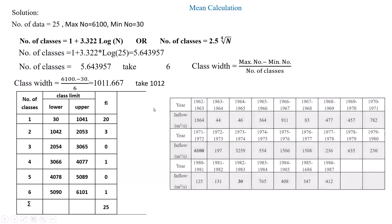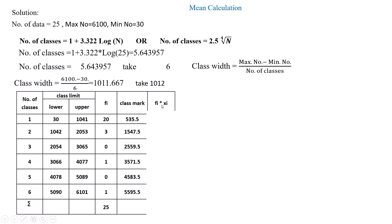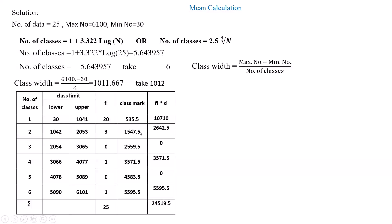The class mark equals (lower limit + upper limit) ÷ 2. We then compute fi × xi (frequency times class mark) for each class. Using the class mark method, the mean equals the summation of (fi × xi) divided by the summation of fi. The calculated mean equals 980.78.